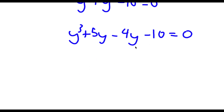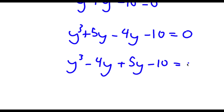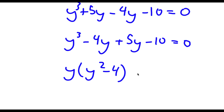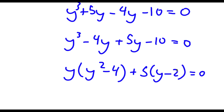Now I'm going to rewrite the order of this to y to the power of 3 minus 4y plus 5y minus 10 is equal to 0. If I factor out y from y to the power of 3 minus 4y, I get y times y squared minus 4. And then if I factor out 5 from 5y minus 10, I get 5 times y minus 2, is equal to 0.